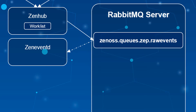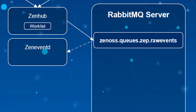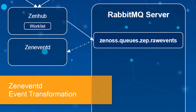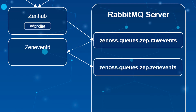For events that originate in the unknown event class, like traps and syslog messages, ZenEventD will compare the incoming event to any configured event mapping instances and execute that mapping if a match is found. This will rehome the event to a more appropriate event class. If the event's event class, or one of its parent classes, contains transform code, ZenEventD is responsible for executing that code against the event. When ZenEventD is finished contextualizing and enhancing an event, it then publishes the event to another Rabbit queue — xenos.qs.zep.zenEvents — and moves on to the next.